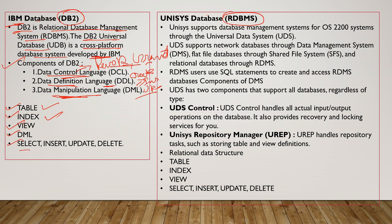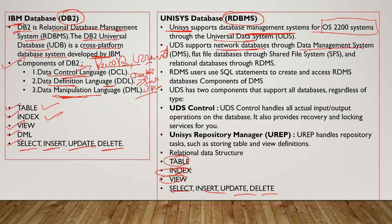In DB2 we can write table queries, index queries, view queries, and DML operations like SELECT, INSERT, UPDATE, and DELETE. Similarly in Unisys we have tables, indexes, views, and the same DML operations. Unisys supports database management for the OS 2200 system through UDS (Universal Data System) for network databases, DMS (Database Management System) for flat file databases through SFS (Shared File System), and relational databases through RDMS.